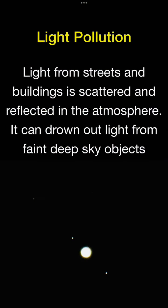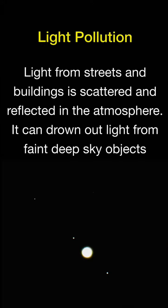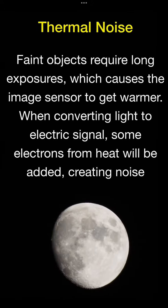Light pollution is light from streets and buildings scattered and reflected in the atmosphere. In the worst case it can drown out the faint light from deep sky objects.